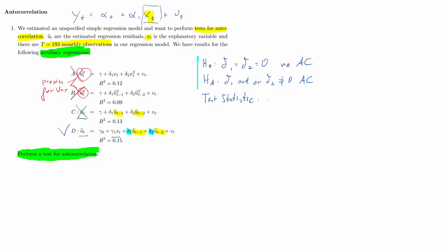The test statistic we're going to use to test this hypothesis is what we call the LM test, and that is T aux, the sample size of the auxiliary regression, times the R squared from the auxiliary regression.